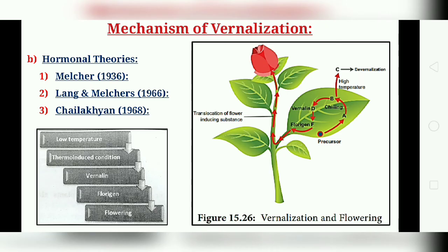As per Lank and Mackler, a precursor A is converted into a thermo-labile compound B during cold treatment. At normal temperature, B changes into a stable compound C, which is vernaline, and which causes flowering. However, at high temperature, B is converted into D and flowering does not take place, due to devernalization.